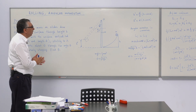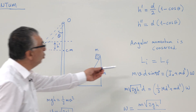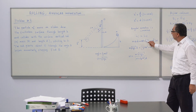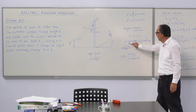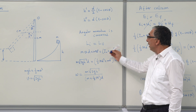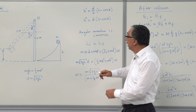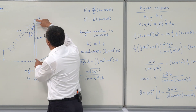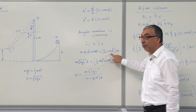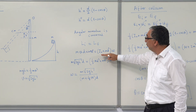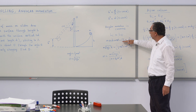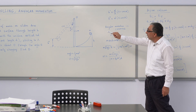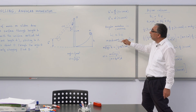Angular momentum is conserved during the collision. The initial angular momentum is mvd·sin 90° = mvd. The final angular momentum is Iω, since after the collision there is only rotational motion about the fixed point O. We write the final angular momentum as I·ω, where I includes the rotational inertia of the rod (1/3)Md² plus the contribution from mass m.